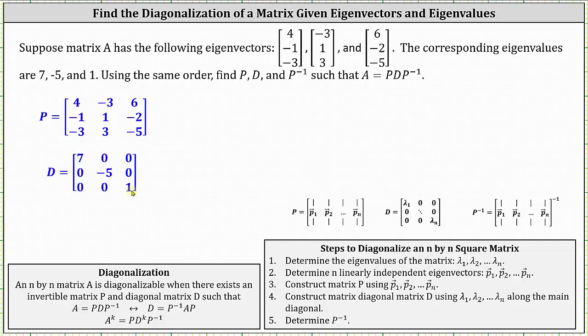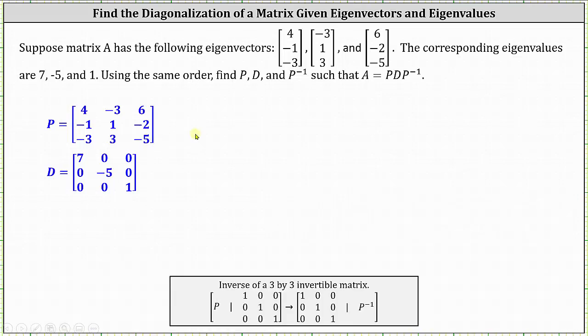To complete the diagonalization of matrix A, we need to find the inverse of matrix P. There's a couple of ways we can do this. I'm going to go ahead and use an augmented matrix, where if we set this up so that the first three columns are matrix P and then columns four, five, and six are the identity matrix, we can then perform row operations so that we have the identity matrix on the left and the entries on the right will be P inverse.